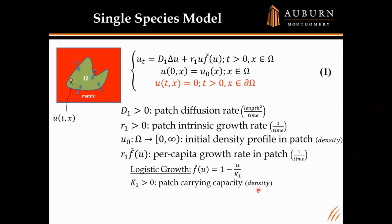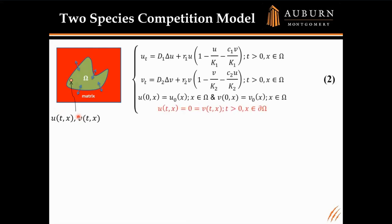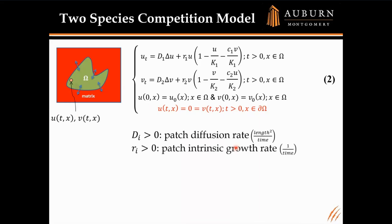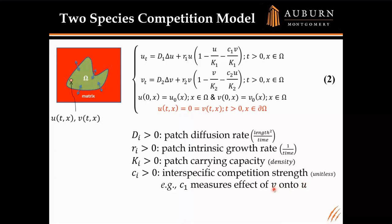For the two-species competition model, we still have an island surrounded by a hostile matrix, but now at every time t and location x, I'm modeling the density of two competing species u and v following a standard Lotka-Volterra diffusive competition model. D_i represents patch diffusion rate, R_i the patch intrinsic growth rate, K_i the patch carrying capacity, and C_i is the interspecific competition strength. C1, for example, measures how much competition u is sensing from v — the higher the density of v, the more it starves u for resources.